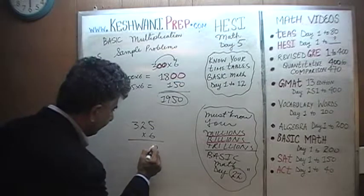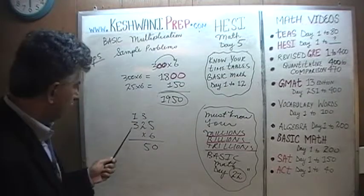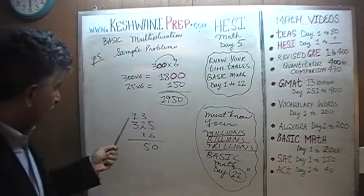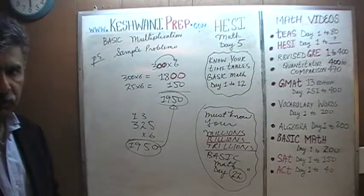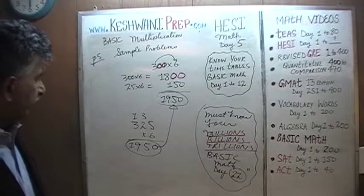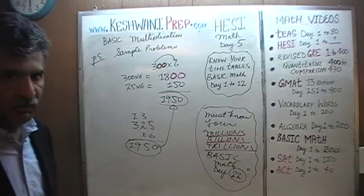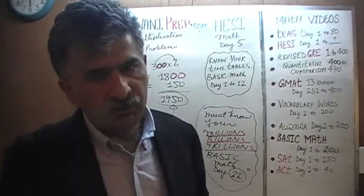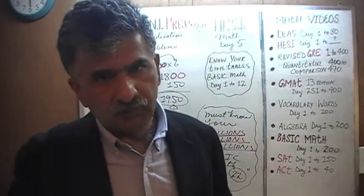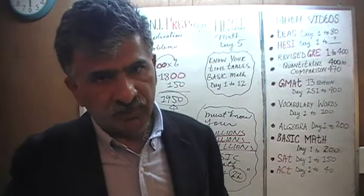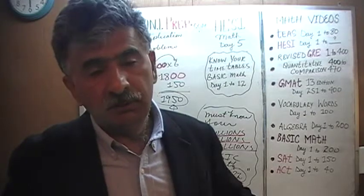Six fives are 30, carry 3; six twos are 12, plus 3 is 15, carry 1; six threes are 18, plus 1 is 19. We get 1,950 — just like we said. We broke 325 times 6 into two simple manageable parts: 300 times 6 is 1,800, and 25 times 6 is 150, giving 1,950.